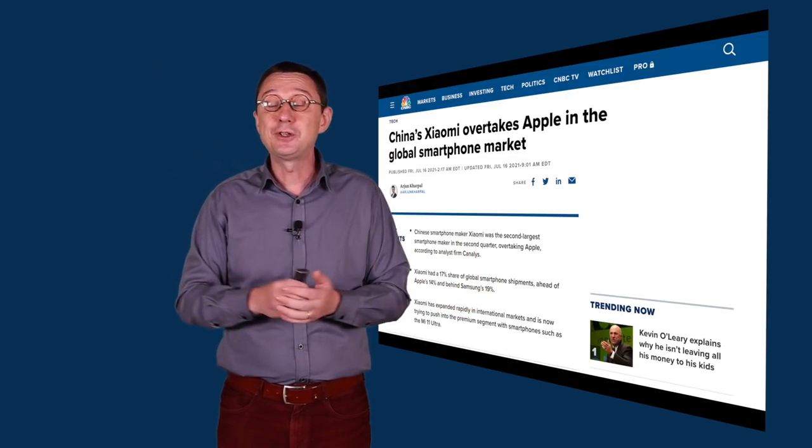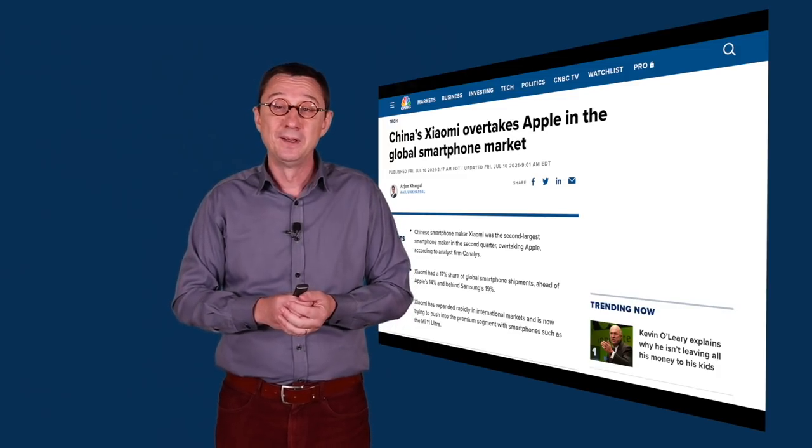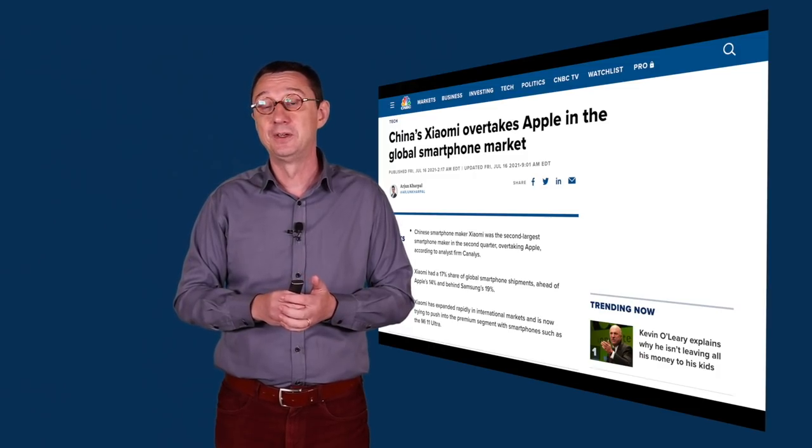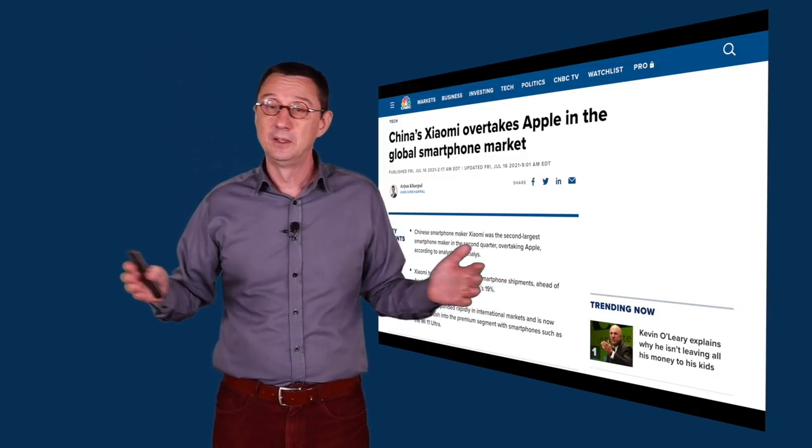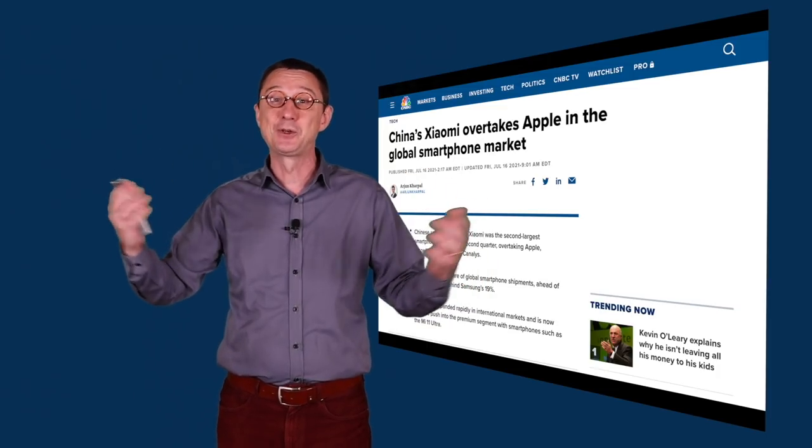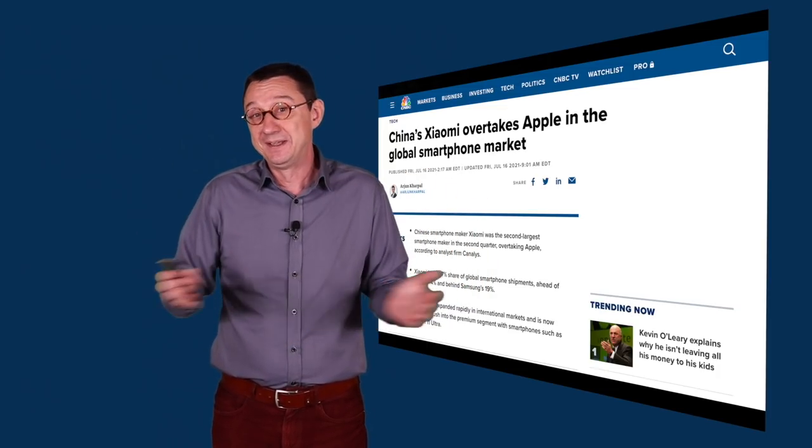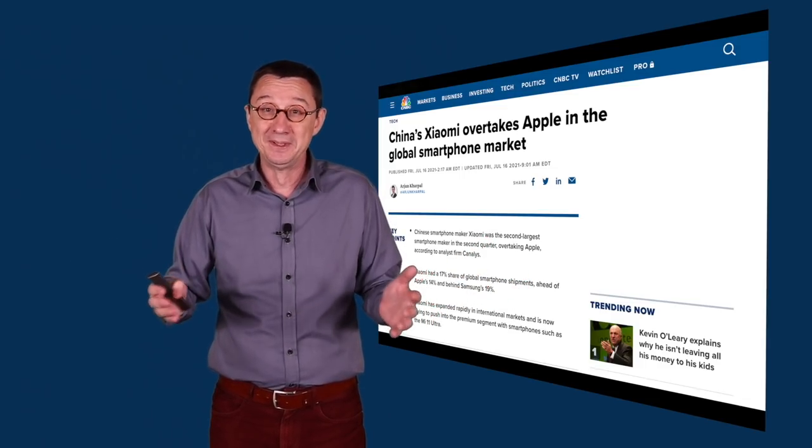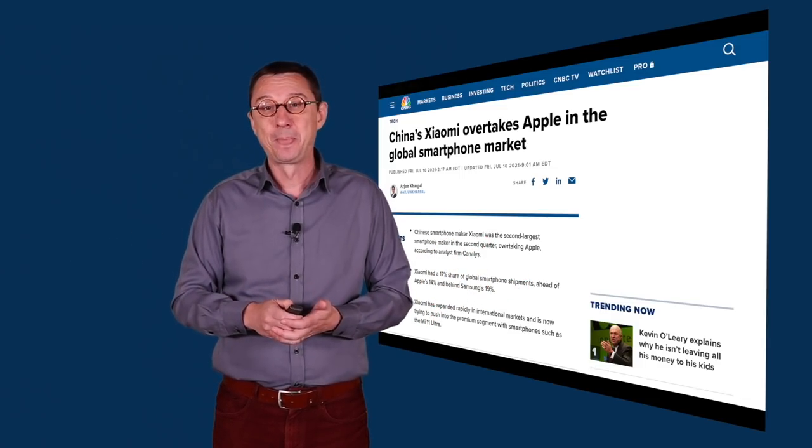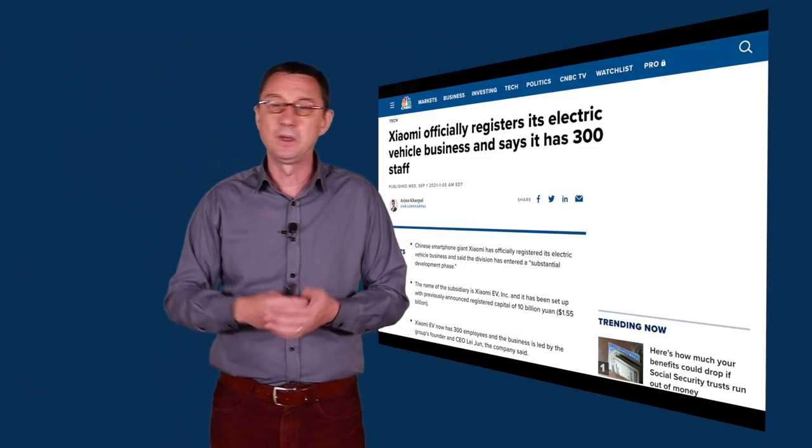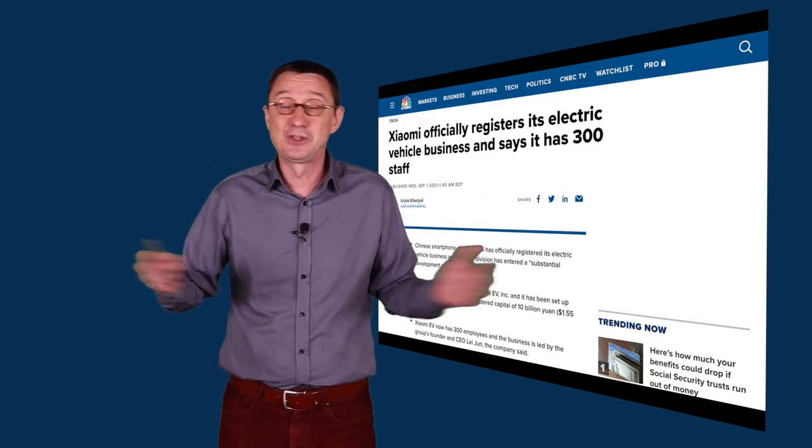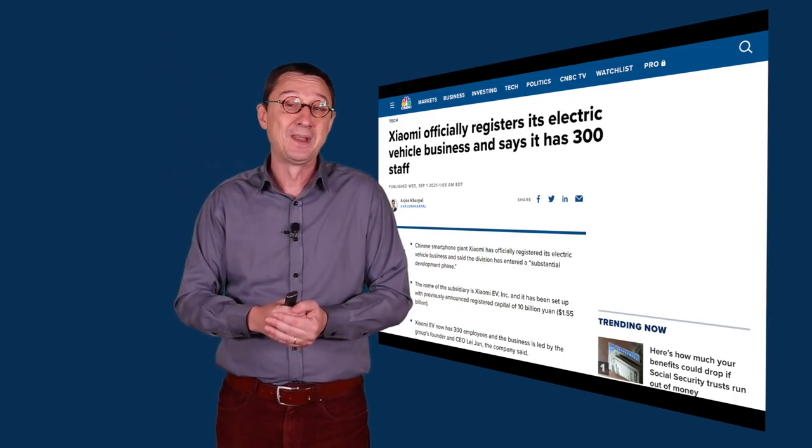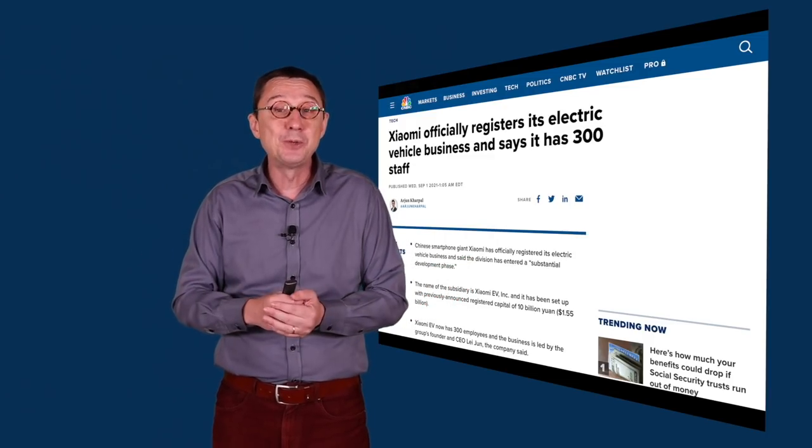Just last quarter in Q2 2021, Xiaomi for the first time actually became the biggest smartphone manufacturer in the world on market share. They beat Apple, not Samsung yet, but that's their next goal in the next years. And so this is not a small company anymore. And one of their latest things is also just like Apple, going into the electrical vehicles or going into the cars. And Xiaomi will also be building a car.